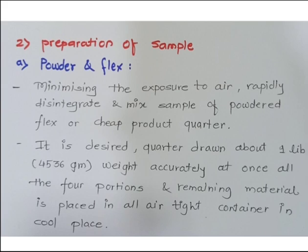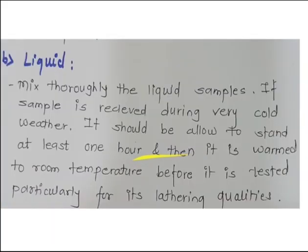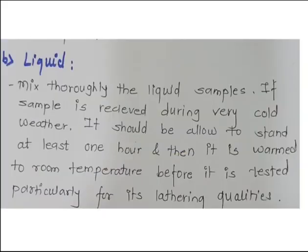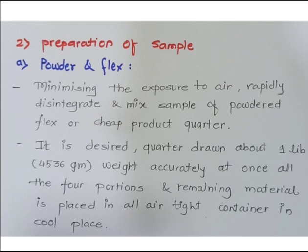In today's lecture we will see preparation of sample. Preparation of sample involves three steps: powder and flax, then liquid sample, and the third one is paste. We will start with the second point of the analysis method, that is the preparation of sample. The first point is powder and flax.